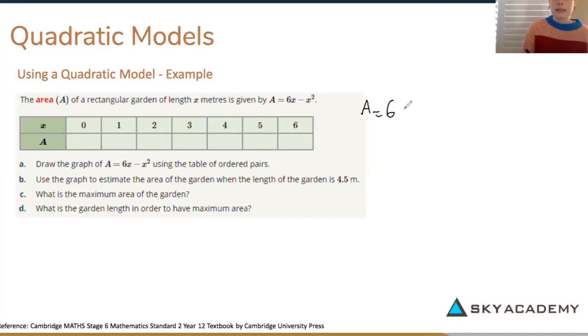A equals 6 times whatever our x value is, so I'm going to do 0 minus 0 squared and if you put that into your calculator or if you just know anything times 0 is just 0. And now I'm going to do the same but instead of having 0 as my x, I'm now going to have 1 as my x and that's going to give me the value of 5.